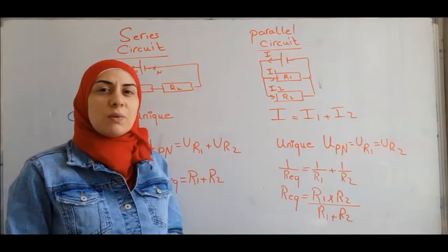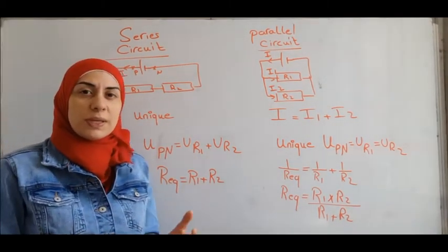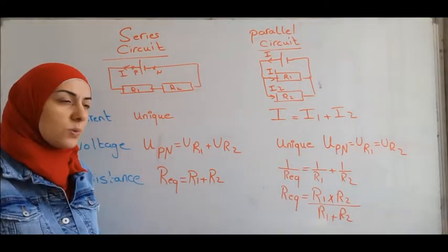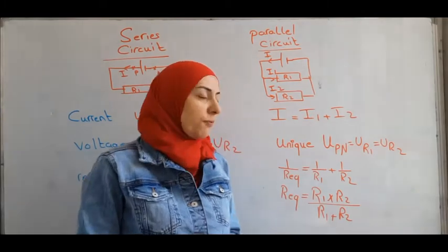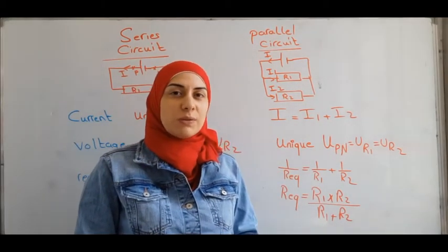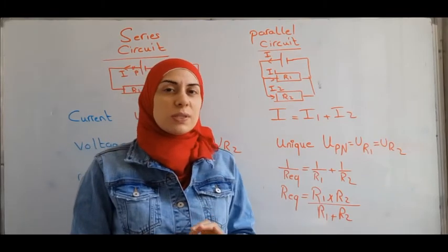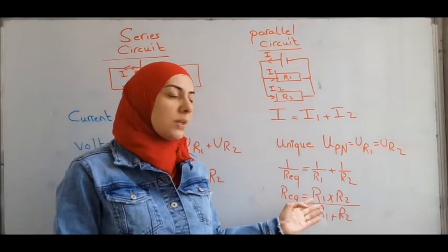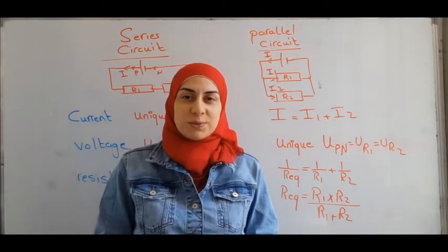To find the equivalent resistance in a series circuit, you simply add: R_equivalent equals R1 plus R2. In a parallel circuit, you apply the formula: 1 over R_equivalent equals 1 over R1 plus 1 over R2. If you have only two resistors in parallel, you can use: R_equivalent equals R1 times R2 over R1 plus R2.